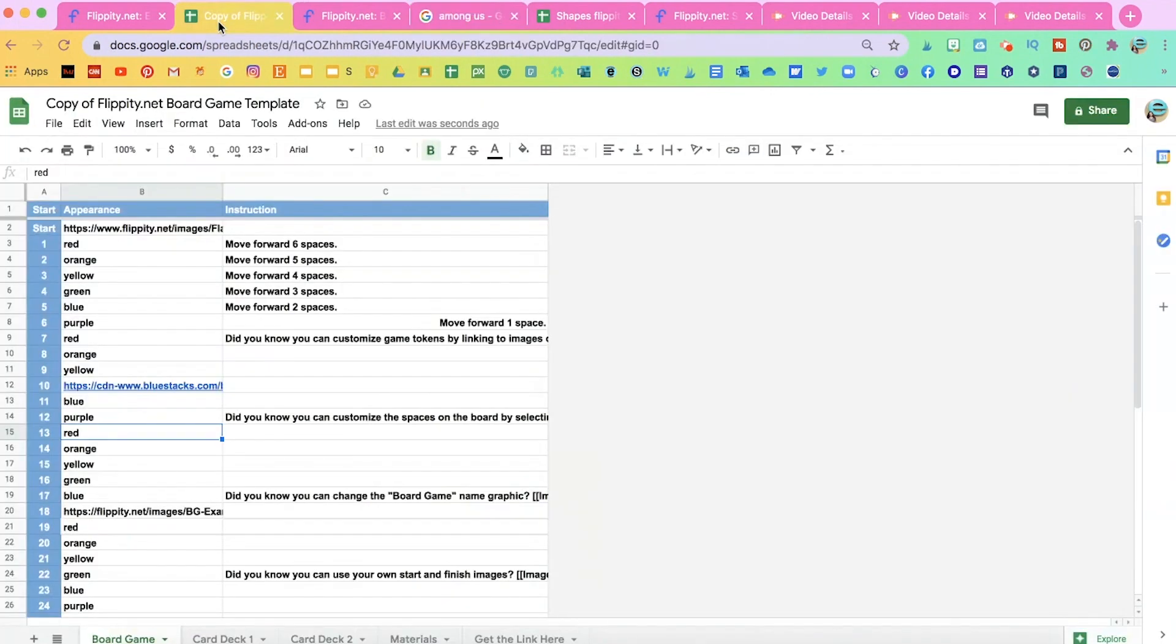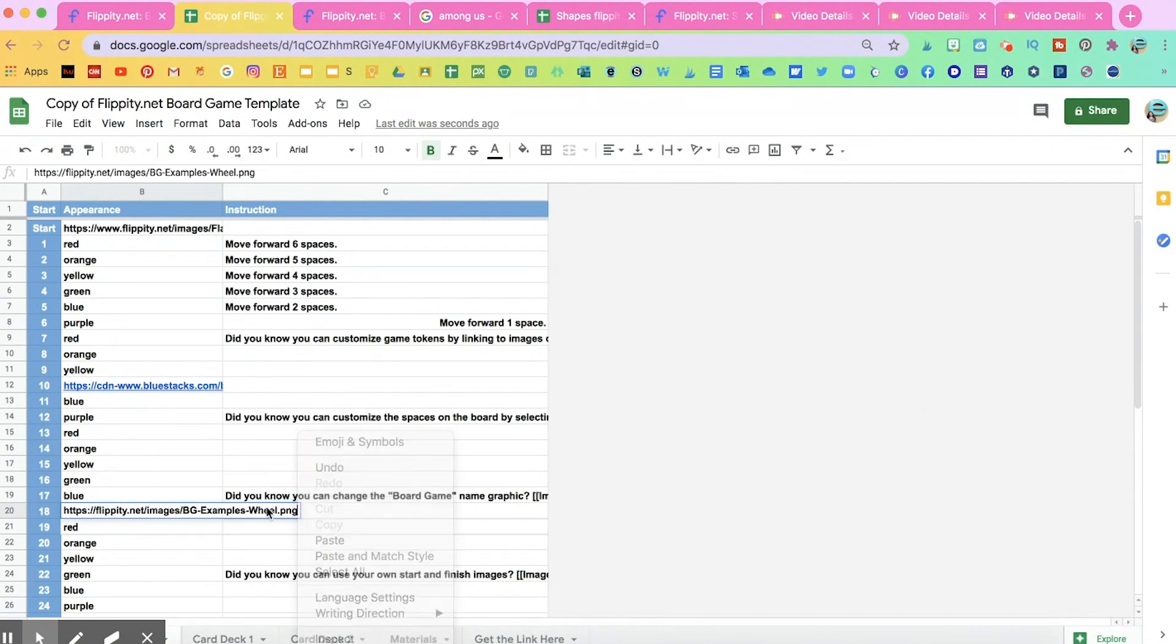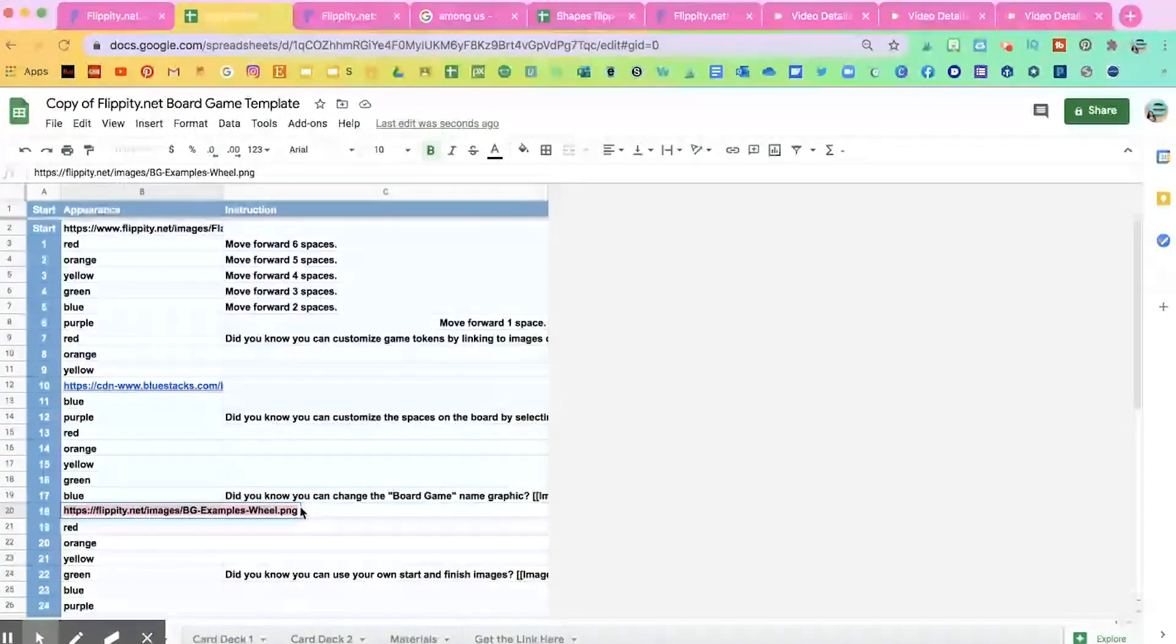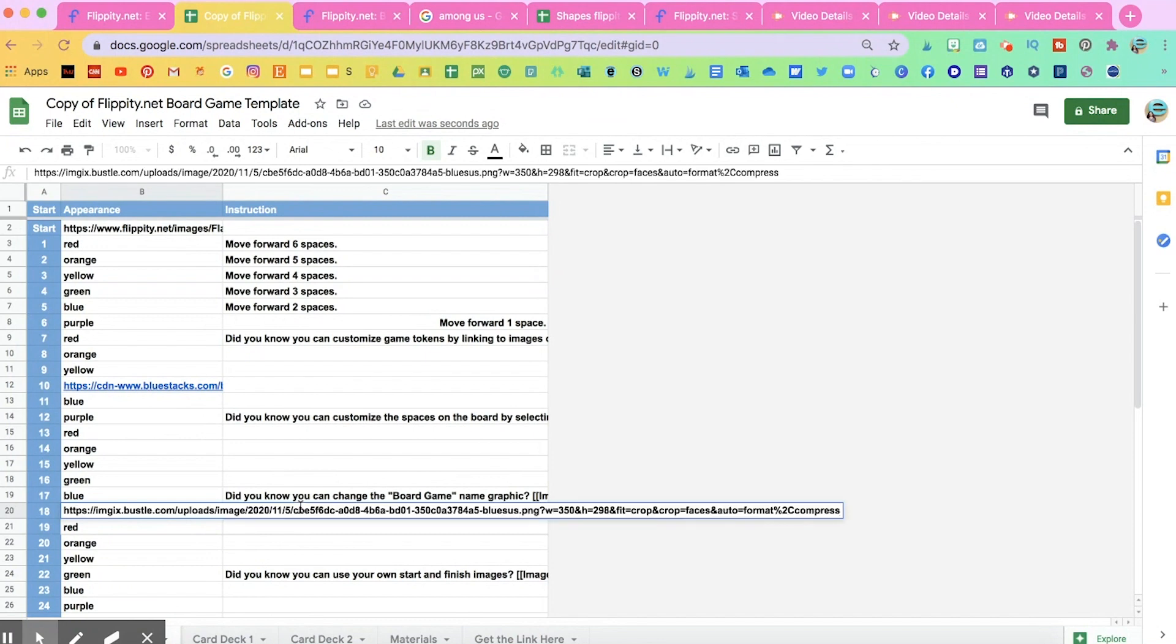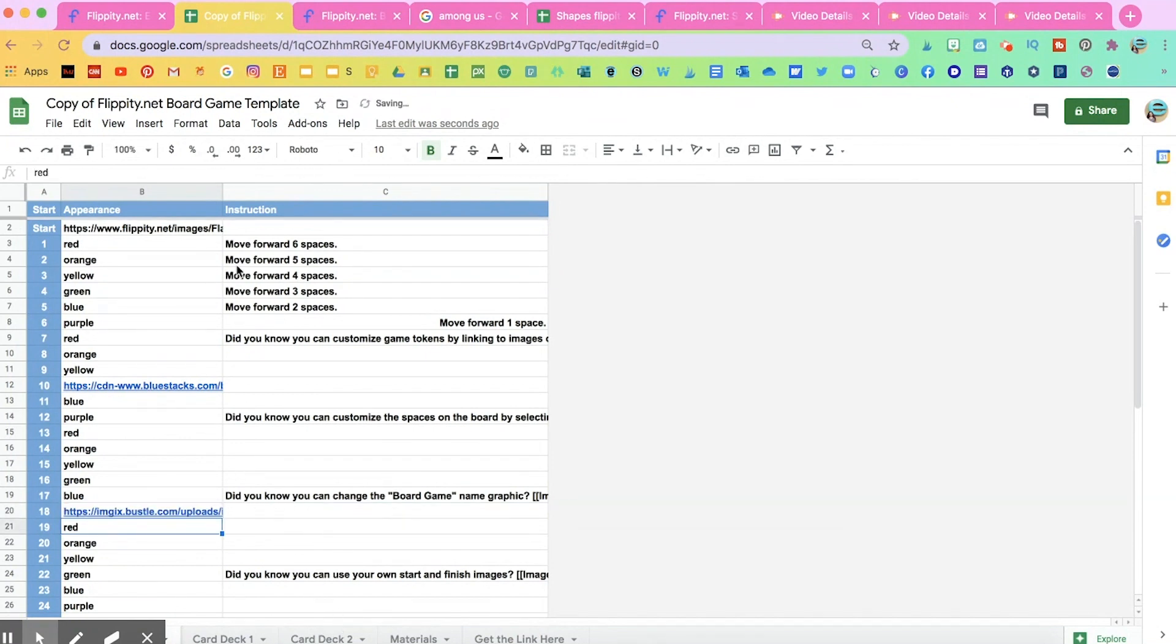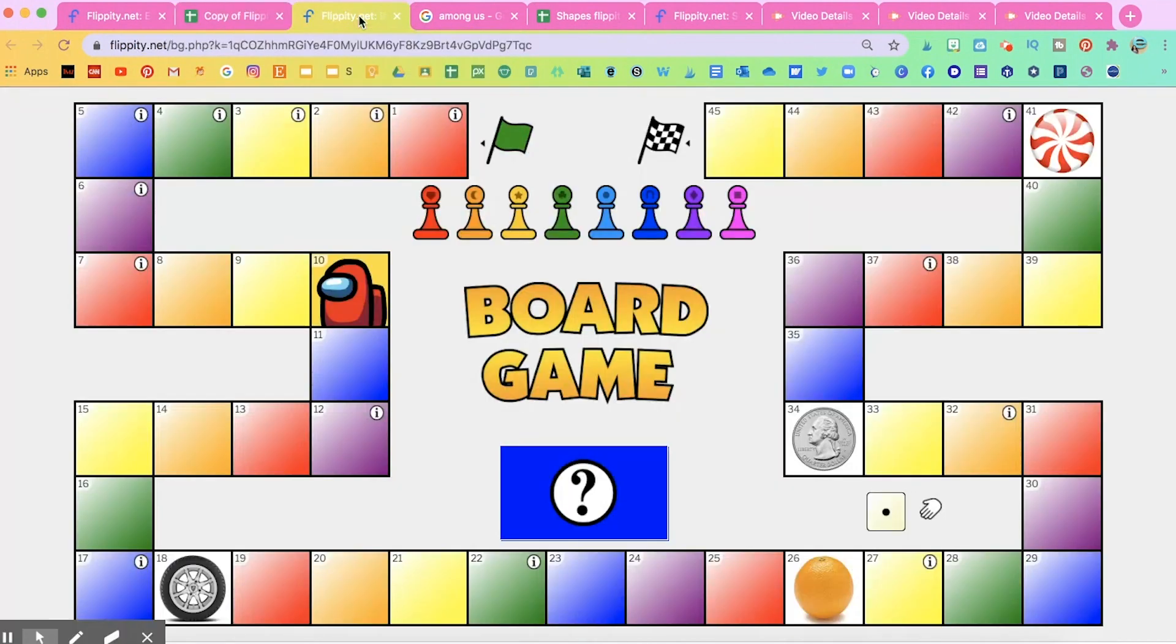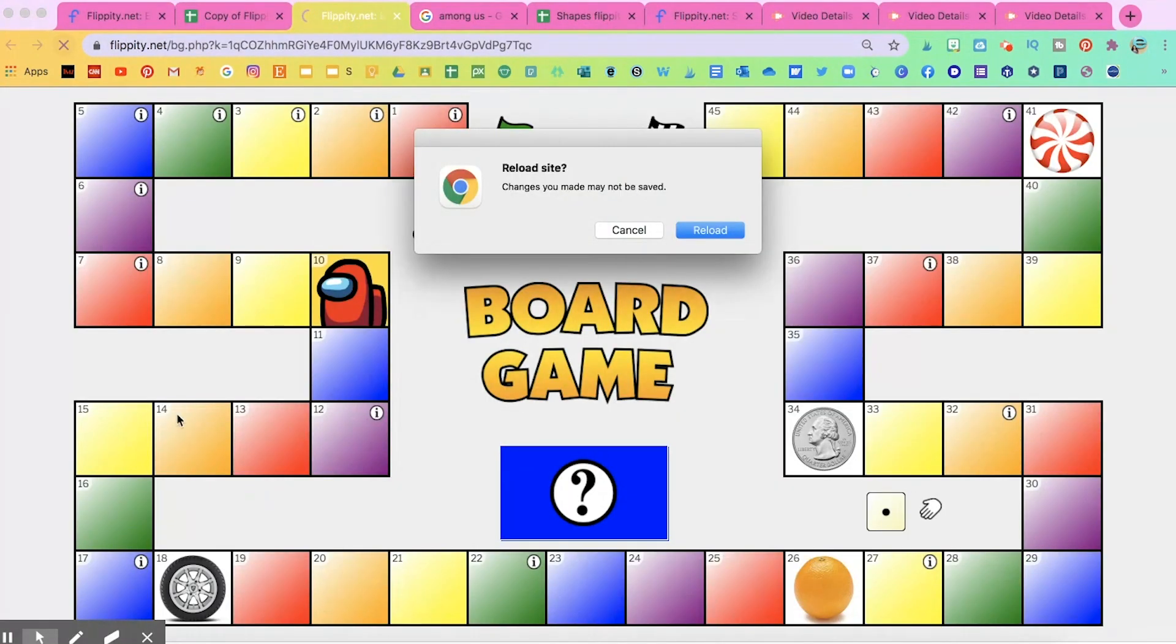And then go back to your spreadsheet. Go to that appearance for number 18. And I'm going to erase that image of the tire. It even says wheel of the wheel. And I'm going to highlight it, delete it, and then paste the new image that I had copied.